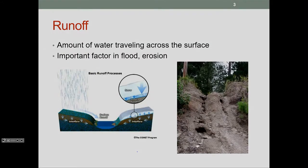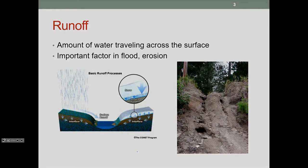The amount of water that travels across the surface is what we call runoff. It's a particularly important factor in both flooding, when we have too much water in a location to deal with, and also in erosion — erosion being the movement of sediment and soil from one place to another, as pictured here on the right.